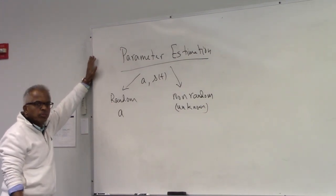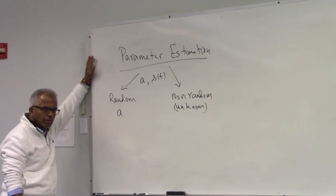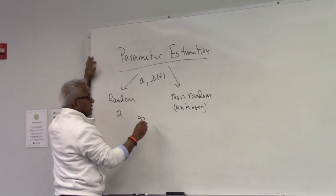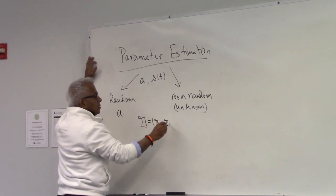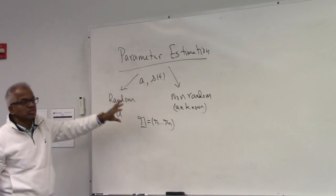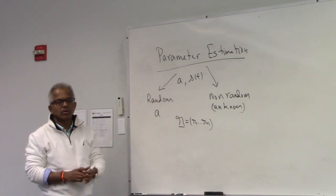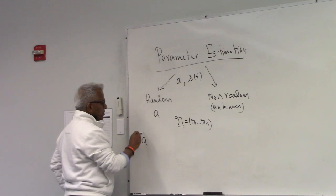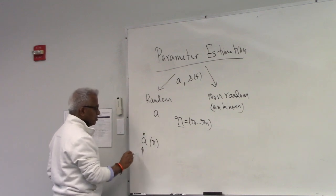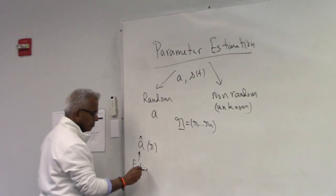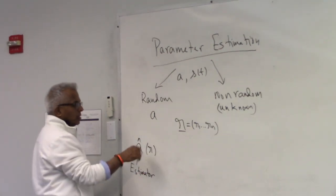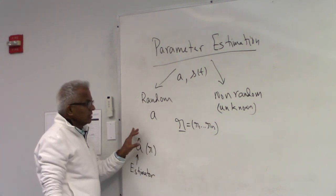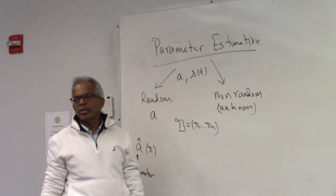Either way, you collect data. The design of the experiment is such that you collect relevant data. The estimator is going to be a function of the data. Because the data is inherently stochastic — whether the parameter is random or non-random — the estimator is going to be a random variable.